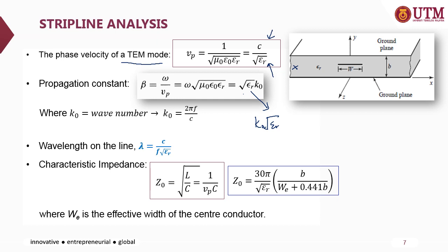The propagation constant beta is equivalent to the square root of epsilon_r multiplied by k0. k0 is the wave number given by 2πf divided by the speed of light, and the wavelength of the line equals lambda. The characteristic impedance Z0 equals 1 over Vp multiplied by the capacitance. It can also be calculated using an equation that depends on B (or H), the thickness of the structure, and W_e, the effective width of the center conductor.